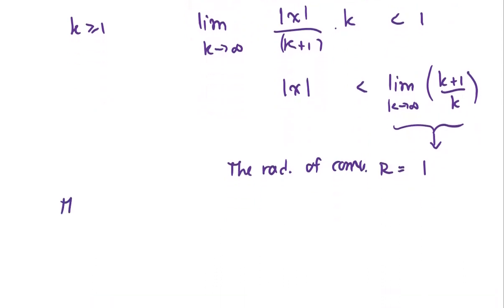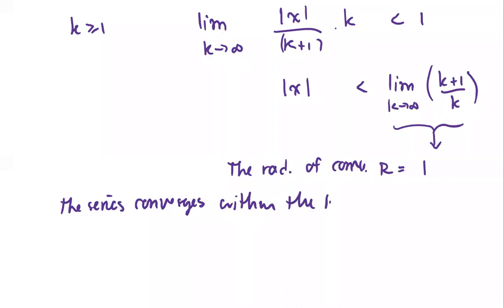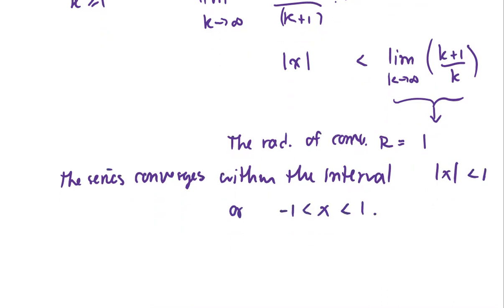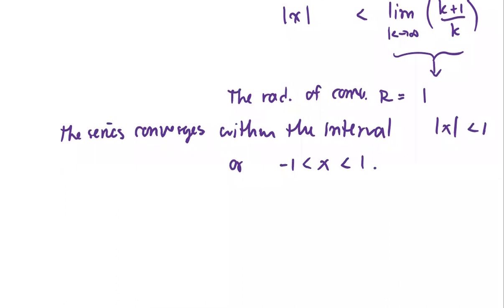The series converges within the interval where the absolute value of x is less than one, or negative one less than x less than positive one. Next, we are going to check the two endpoints.